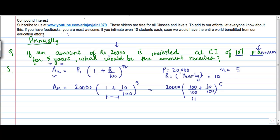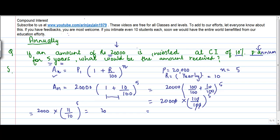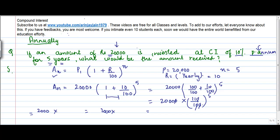This can be written as 110 upon 100 to the power 5, into 20,000. The zero gets knocked off, so we're left with 2000 into 11 divided by 10 to the power 5. Actually, after reducing all the zeros, it becomes 2000 into 11 to the power 5.